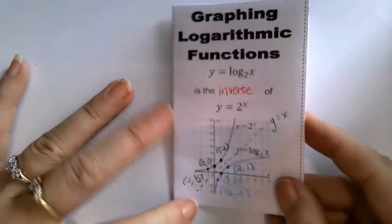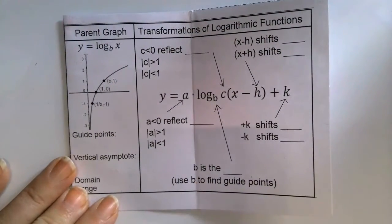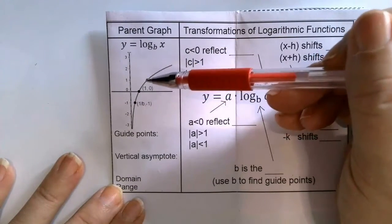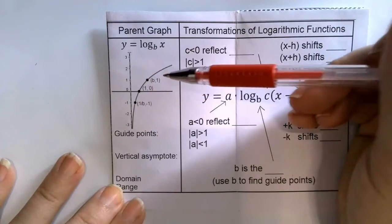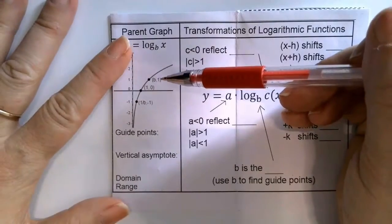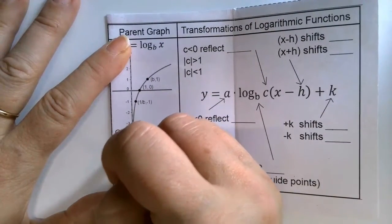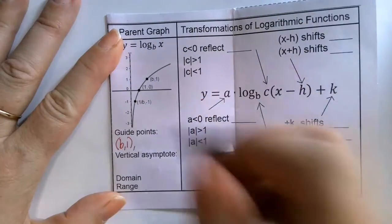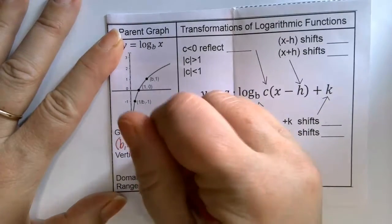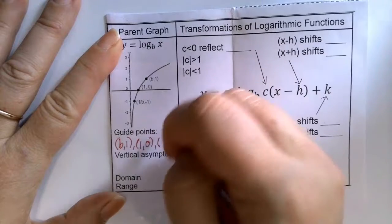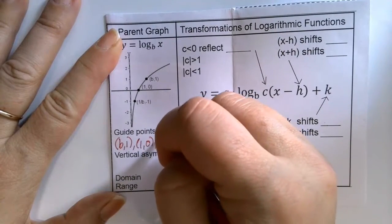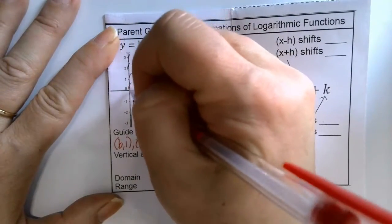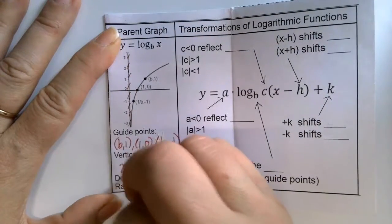The parent graph of log base b of x always passes through the same three anchor points as y equals b to the x, only switching the x and y. So our guide points, instead of going through (1, b), go through (b, 1). Instead of the y-intercept being (0, 1), the log base b of x has an x-intercept of (1, 0). And then our third anchor point, instead of being (negative 1, 1/b), becomes (1/b, negative 1).